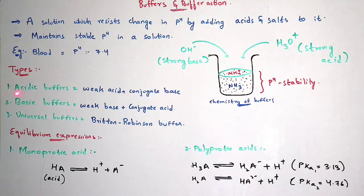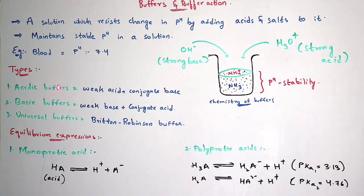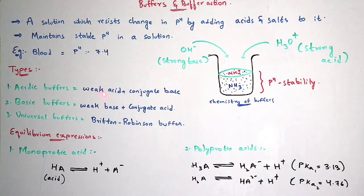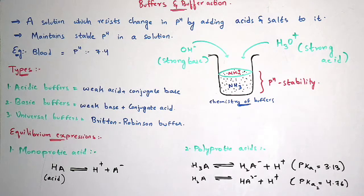Coming to the types, there are three types of buffers: acid buffers, basic buffers, and universal buffers. Acid buffers consist of weak acid and conjugate base. When you add this type of pair to a solution then the solution gets stable, and those buffers are known as acidic buffers.